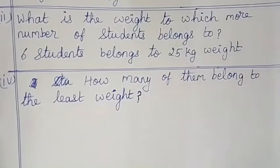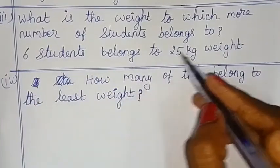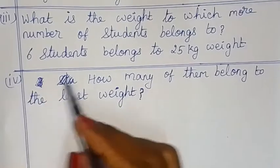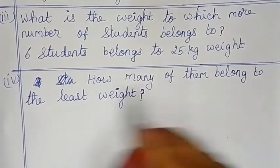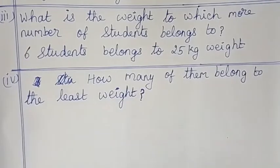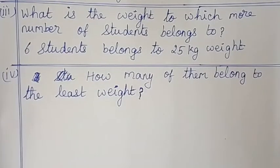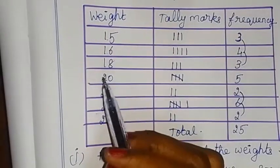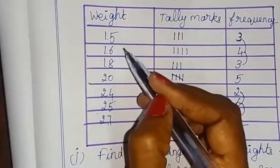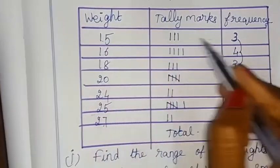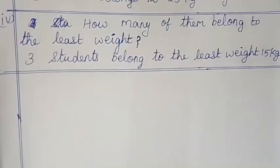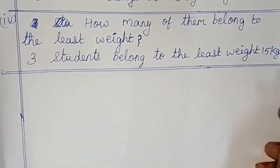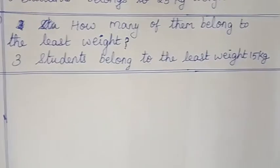How many of them belong to the least weight? The least weight is 15 kg, and 3 students belong to the 15 kg weight. So 3 students belong to the least weight of 15 kg. Thanks for watching, children!